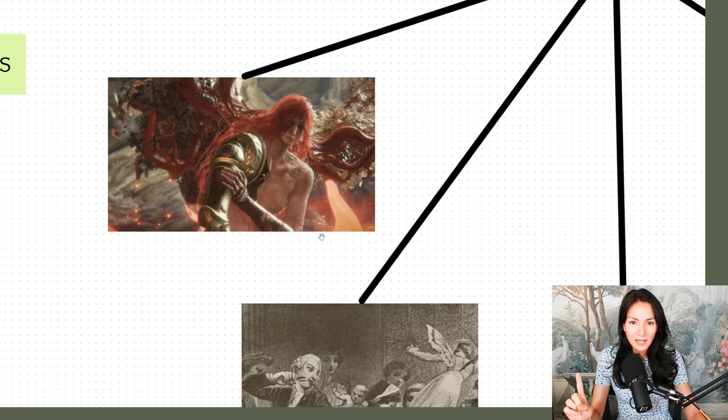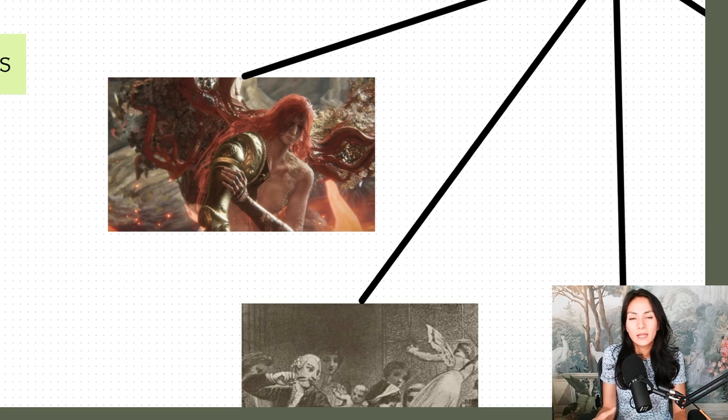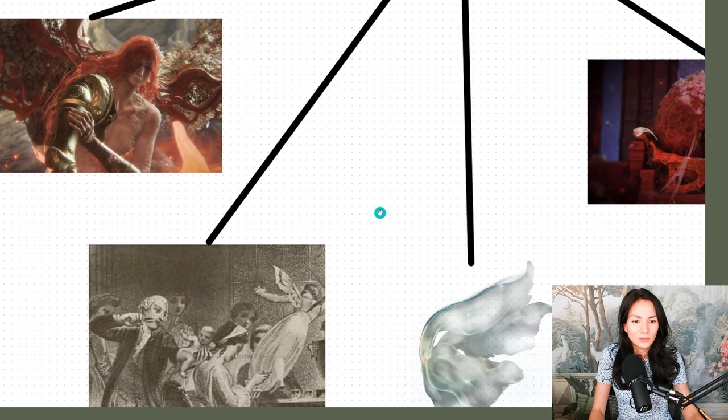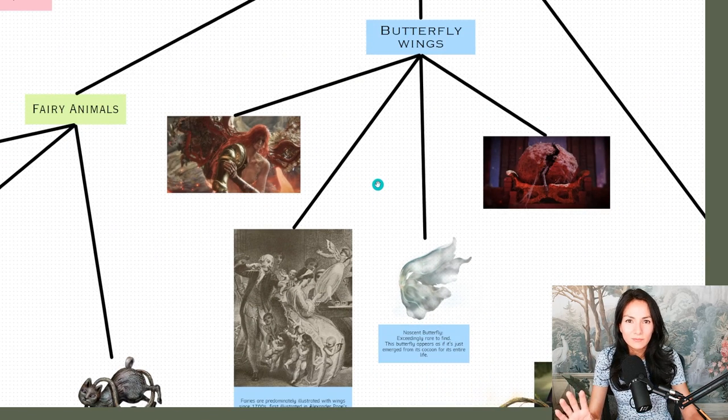It also says this butterfly appears as if it's just emerged from its cocoon for its entire life. And where else do we see a cocoon? Miquella is in a cocoon. That is definitely a cocoon. The symbolism to butterflies using cocoons to metamorphosize. Malania had butterflies, butterfly wings. That's her final form.